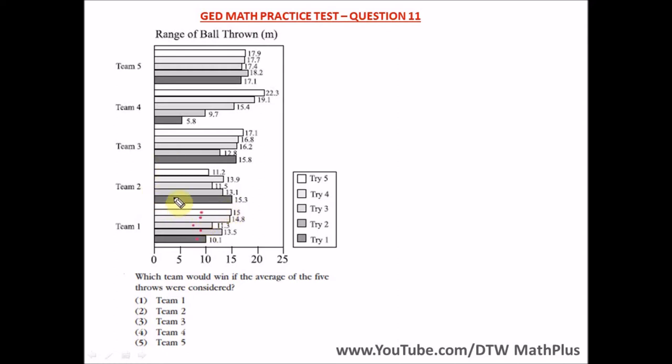There's a space here for team 2: try 1, try 2, then 3, 4, and 5 — and so on until we get to team 5, where this is also try 1, try 2, try 3, 4, and 5.